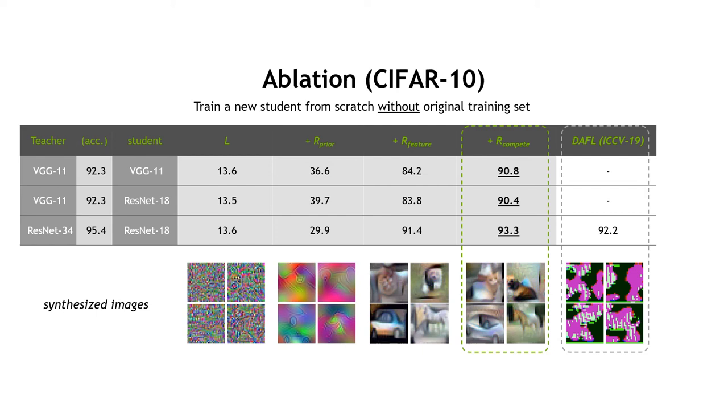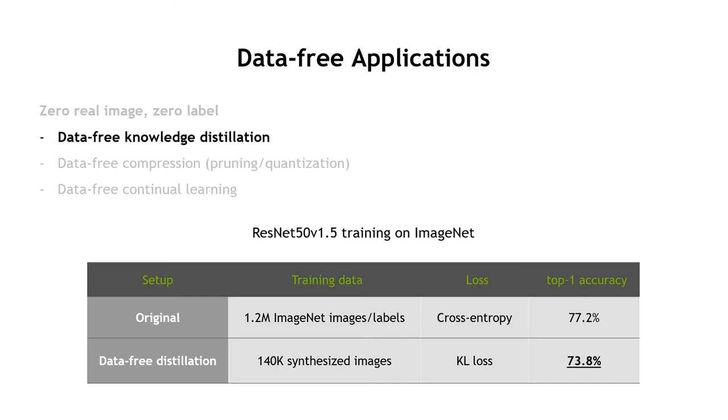The method also scales very well to ImageNet. For data-free knowledge distillation, we can now use synthetic images and KL divergence loss to teach a new student from scratch, achieving up to 74% accuracy given only a 77% teacher and zero original ImageNet data.